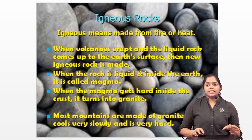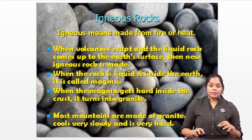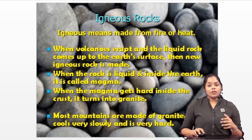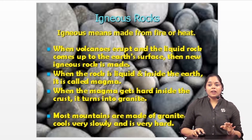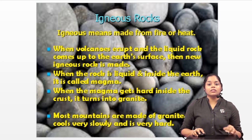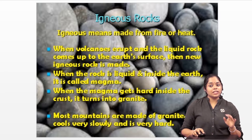Igneous means made from fire or heat. When volcanoes erupt and the liquid rock comes up to the earth's surface, new igneous rock is made. When the rock is liquid and inside the earth, it is called magma. When the magma gets hard inside the crust, it turns into granite. Most mountains are made of granite. It cools very slowly and is very hard.